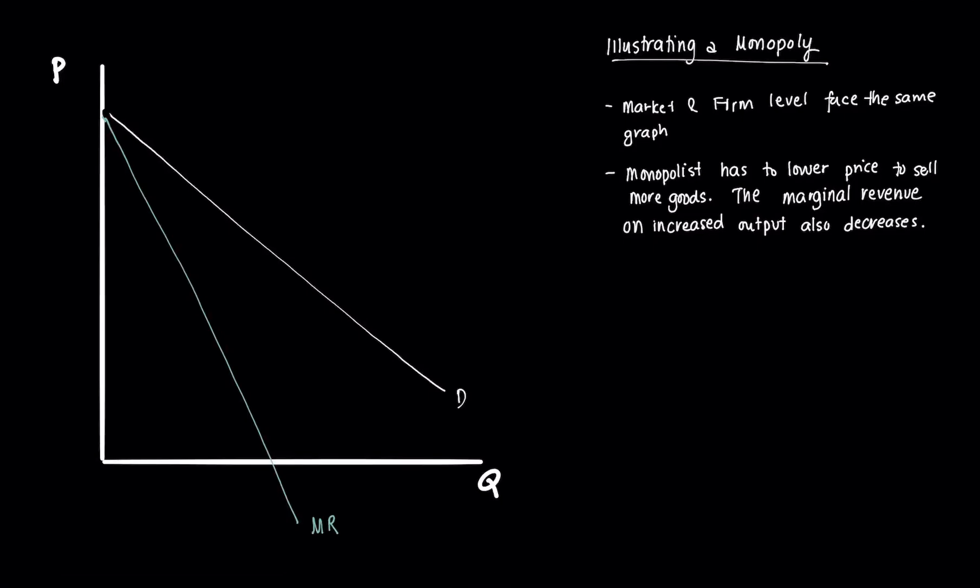You also have a marginal cost curve here, which is quite similar to how it is in perfect competition. Now if you recall from our discussions, the profit maximizing condition for a monopolist is that the marginal revenue as some function of Q should be equal to the marginal cost, which is also some function of Q. When we tried to simplify our first order condition, we got to that condition.